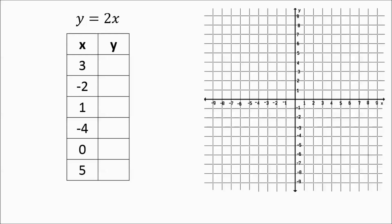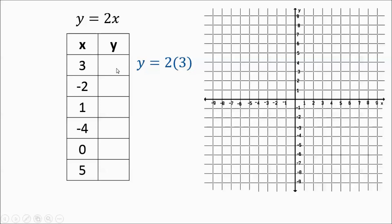Our first equation is going to be y equals 2x. That means I'm going to take all of my inputs, my x values, and I'm going to multiply them by 2. So we're going to create the table — that's the first thing we're going to do. So if I have an input of 3, an x value of 3, y equals 2 times 3, and what is that y going to be? Well, 2 times 3 is 6, so in my y column I'm going to put a 6.